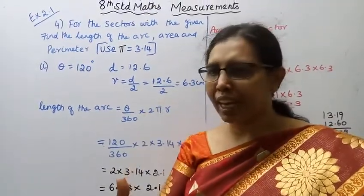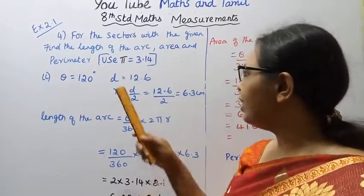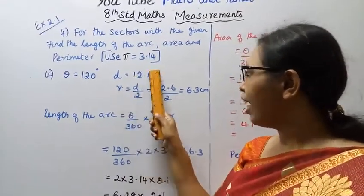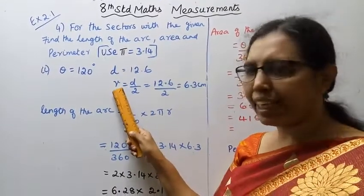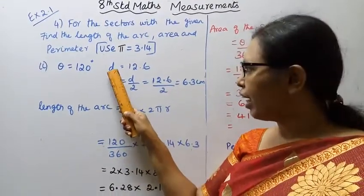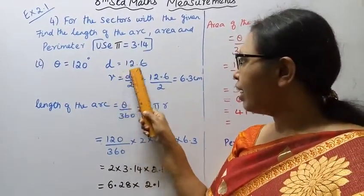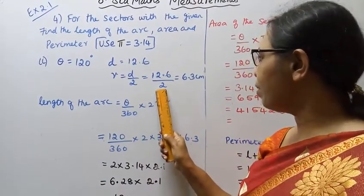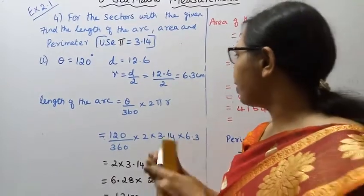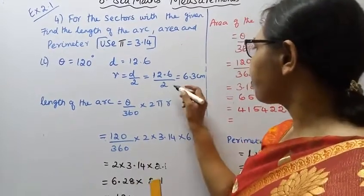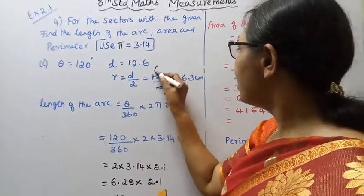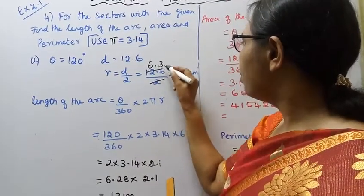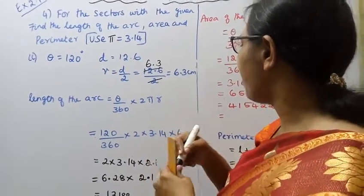Apply the formula: diameter divided by 2 equals radius. So the radius is 12.6 divided by 2, which gives us 6.3. Therefore, the radius r equals 6.3 centimeters.